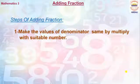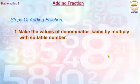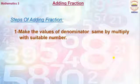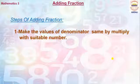Here our first step is: make the values of the denominator the same by multiplying with a suitable number. You are well known with this step because you have done the same in the topic of comparing and ordering fractions, where you learned how to make the denominator the same.